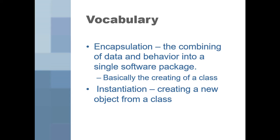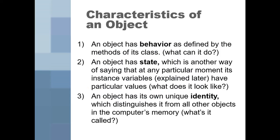Combining data types into one thing is the simpler way to put encapsulation. And instantiation is creating a new object from a class. We've been doing that when we've been creating our keyboard reader — we've been instantiating one, making a new object from the keyboard reader class.